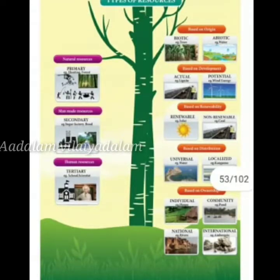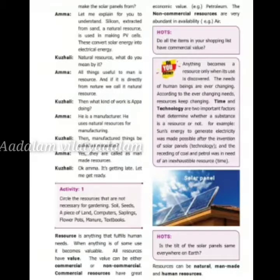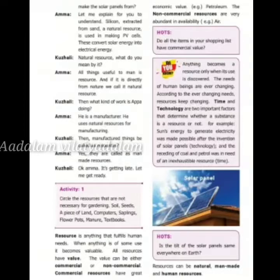Activity 1: Circle the resources that are not necessary for gardening — soil, seeds, a piece of land, computer, saplings, flower pots, textbook. A computer and a textbook are not resources for gardening.